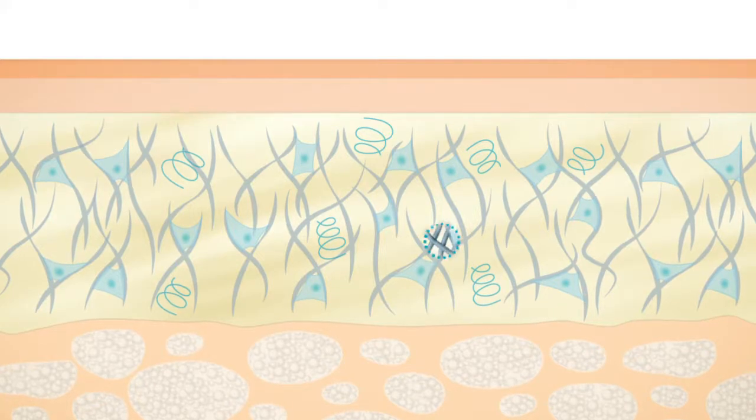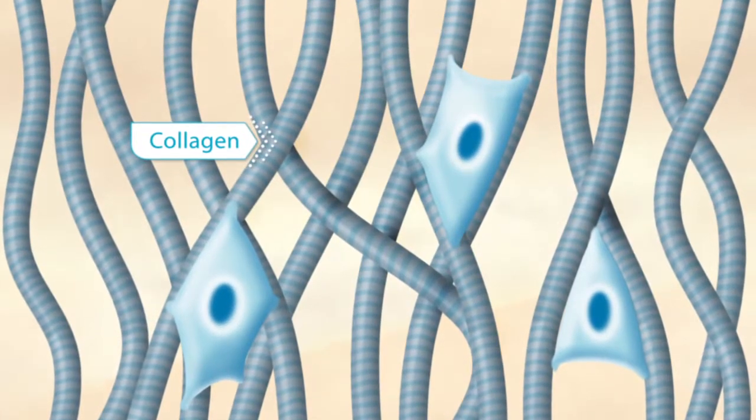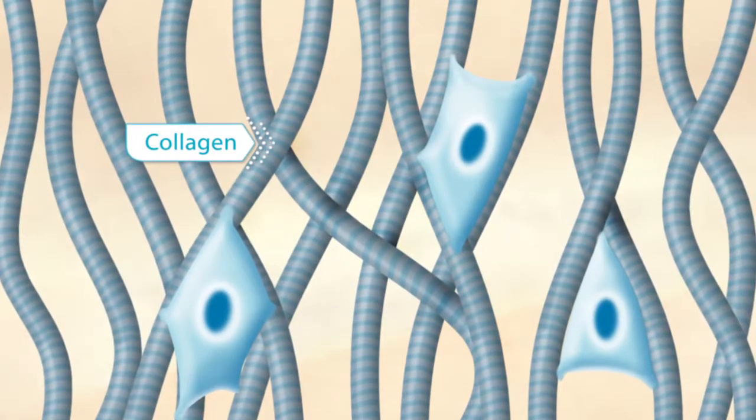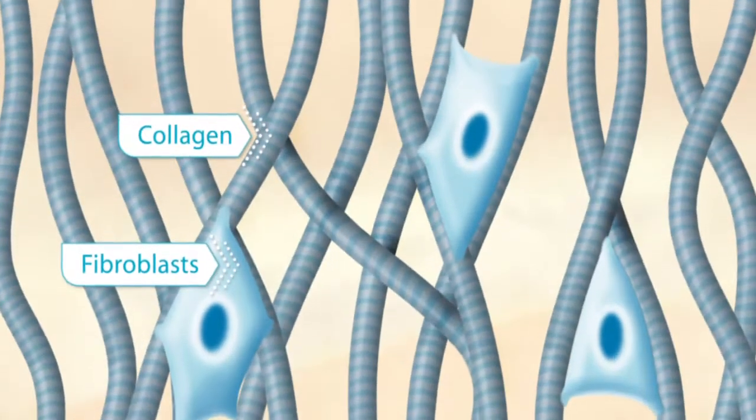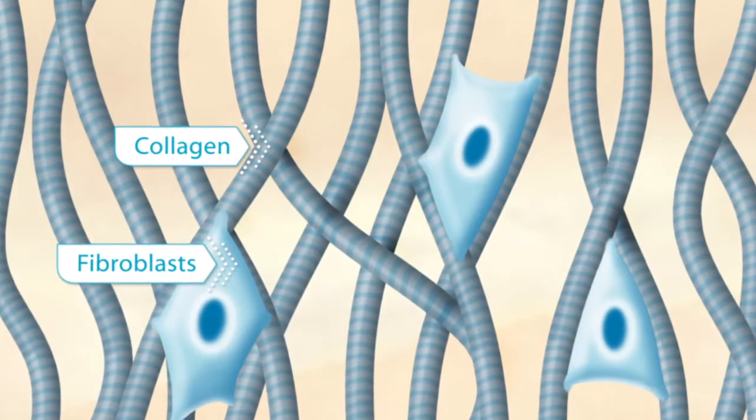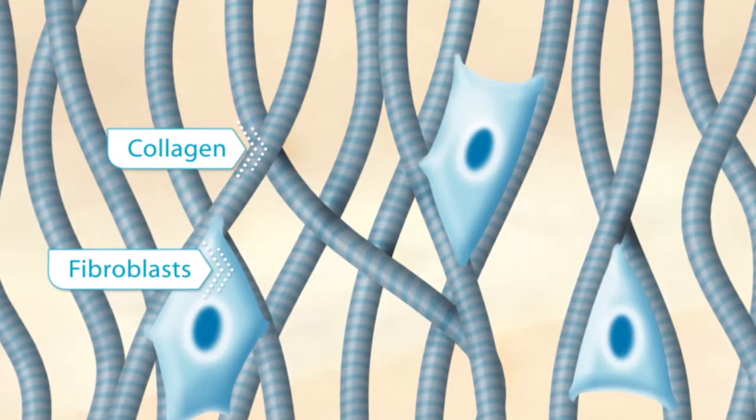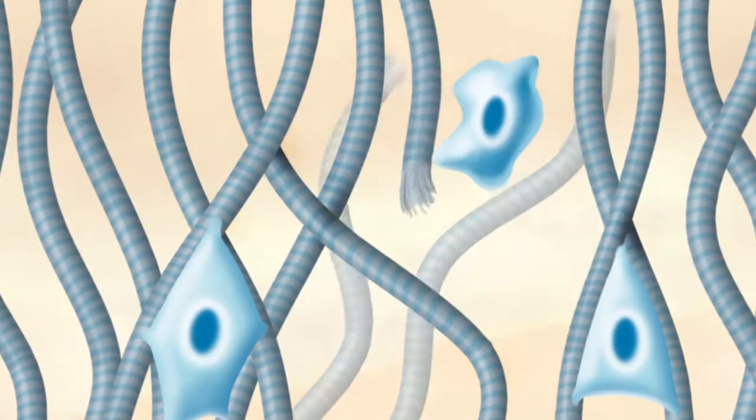Its most abundant component is collagen, a protein that ensures the structural integrity of the skin. Fibroblasts stretch out through the collagen network, and the resulting mechanical tension regulates collagen synthesis. During the aging process, the collagen fibers deteriorate.